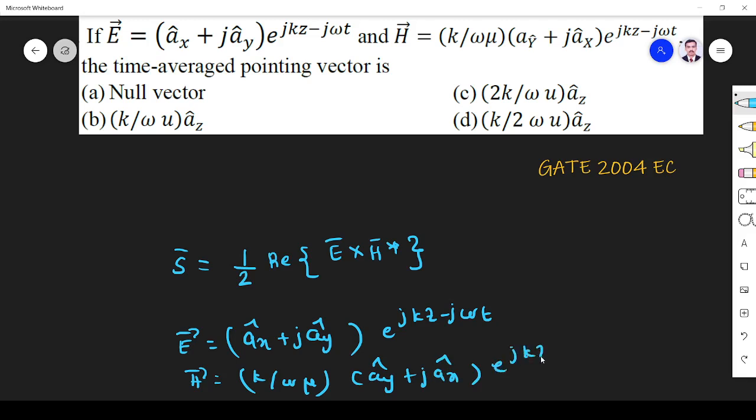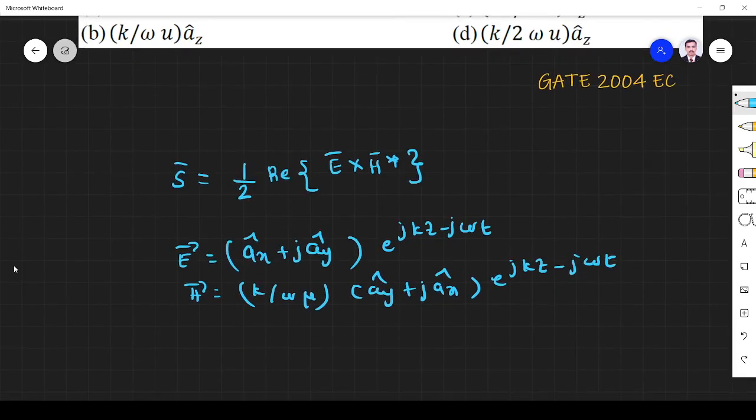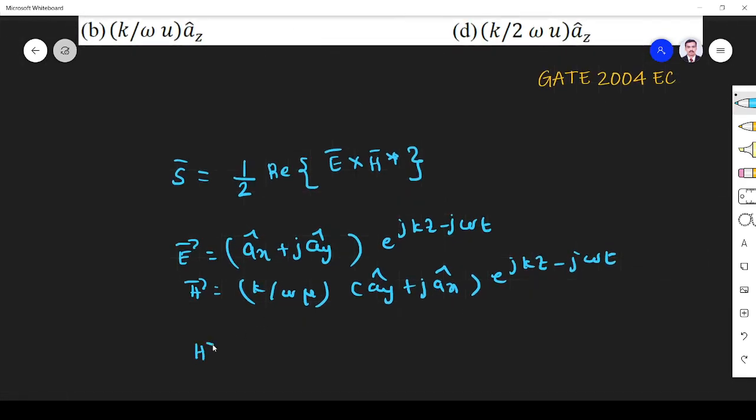What I need is H star. H star means conjugate of H. So k by omega mu, ay conjugate of j, minus j, ax.